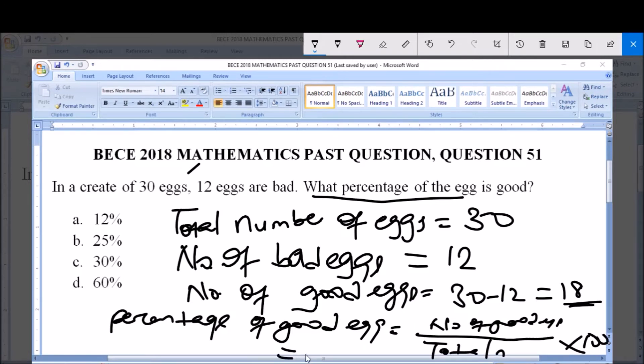So this is equal to, now number of good eggs is 18, divided by total number of eggs which is 30, multiplied by 100. This zero here will cancel with this zero. 18 divided by 3 will give us 6, and 6 times 10 will give us 60%.